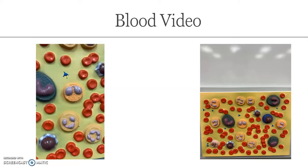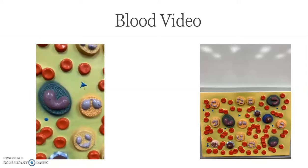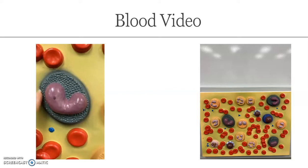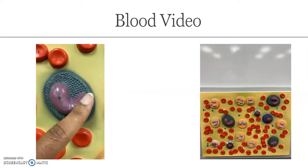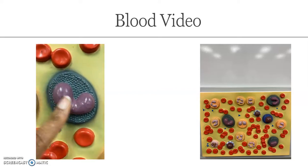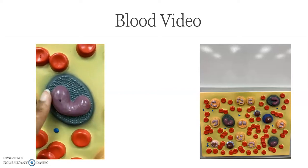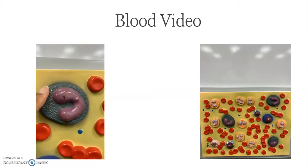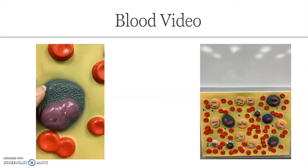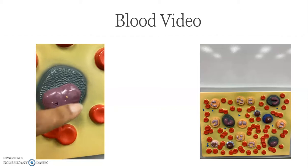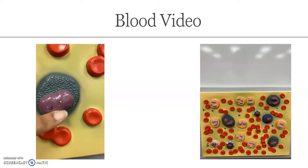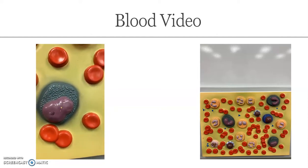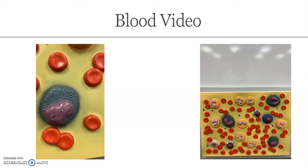Then we have our monocyte. I know that this is a monocyte because it has a kidney bean-shaped nucleus. So this is one monocyte, here's another monocyte, and then this is our third monocyte. It's a bit distorted with the bean-shaped nucleus, but it is represented as a monocyte on this model.